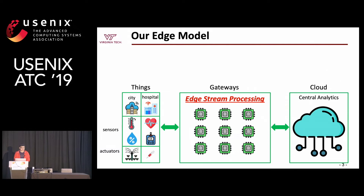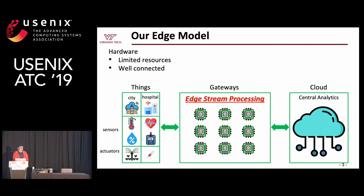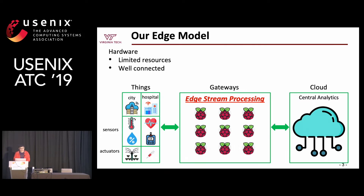Let me introduce our edge model here. We view the edge as a collection of distributed gateways. For the hardware, we assume the gateway has limited resources compared with the cloud, but it can afford reasonably complex operations. For example, we use Raspberry Pi as the gateway in our paper.